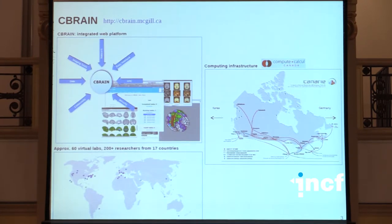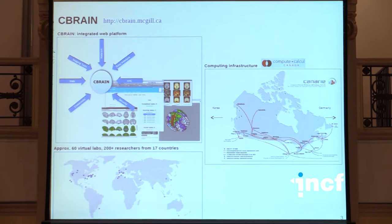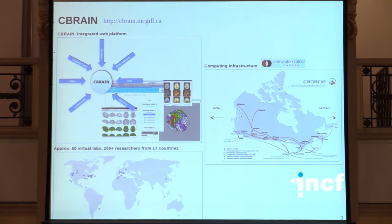Just a few words about C-Brain first. C-Brain is a processing platform accessible at a URL. It's a web platform that offers the possibility to upload files, download results, do visualization, and run pipelines on the Canadian grid infrastructure. It's a fully operational platform with an operational team behind it and quite a large community of users.